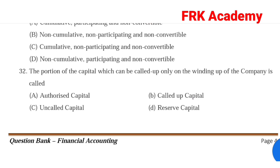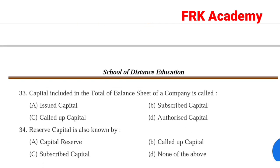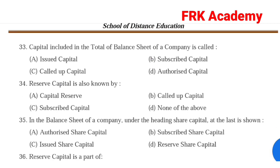Question 32: The portion of capital which can be called up only on the winding up of the company is called reserve capital. Question 33: The total of the balance sheet of a company is called — Answer: Option B, subscribed capital. Question 34: Reserve capital is also known by — Answer: Option D, none of the above, because reserve capital is not the same as called-up capital or subscribed capital.